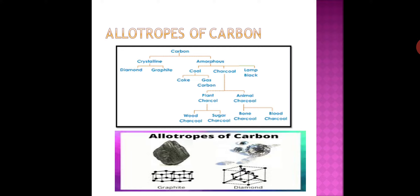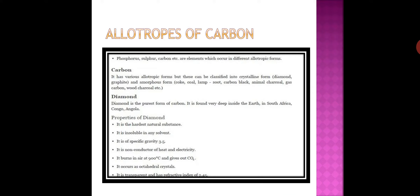The allotropic forms of carbon include the crystalline form. The crystalline form has a regular and definite arrangement of atoms, high melting point and boiling point, and a definite geometric shape with sharp edges and planes.